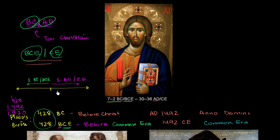Despite the fact that I emphasized that in the last video, I didn't take it into consideration when I calculated how many years there were between Plato's birth and Columbus discovering the new world. The reason is that the year 1492 — whether you call it AD 1492, Anno Domini, or 1492 in the Common Era — it's not 1,492 years since the theoretical birth of Jesus, which we know is not the actual birth.